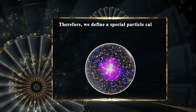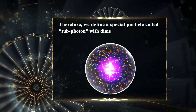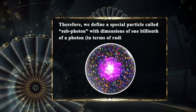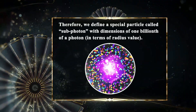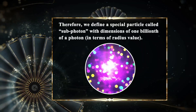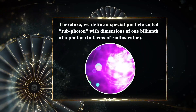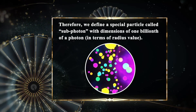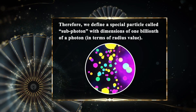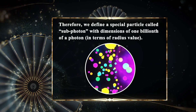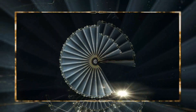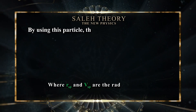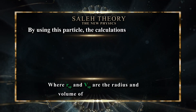Therefore, we define a special particle called subphoton, with dimensions of one billionth of a photon in terms of radius value. By using this particle, the calculations are as follows.